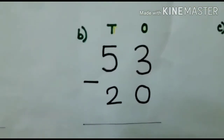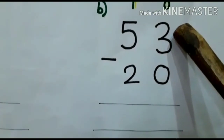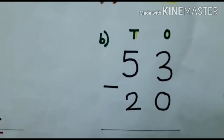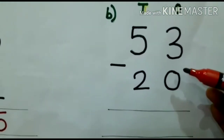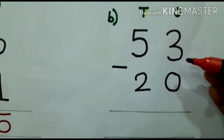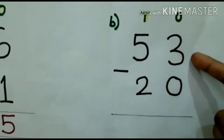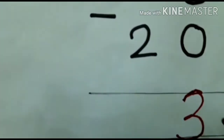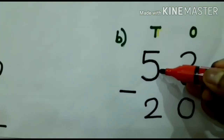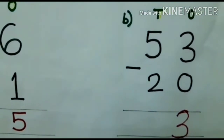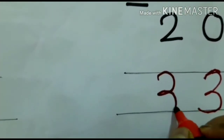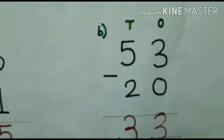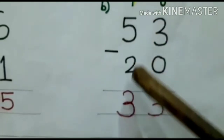Question B: I have to subtract 20 from 53. In ones place I have 3 and 0. We already know the subtraction fact that if we subtract 0 from any number there is no subtraction — I will get the number itself. So 3 minus 0 will be 3. In tens place I have 5 and 2, so 5 minus 2 is 3. If I subtract 20 from 53, my answer will be 33.